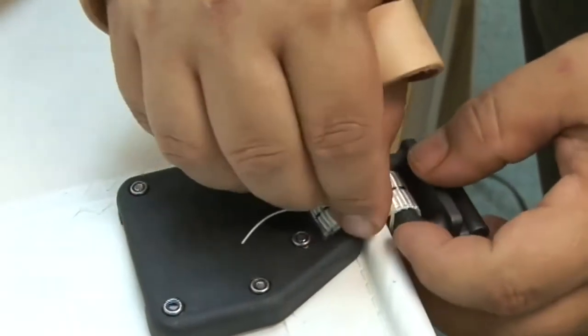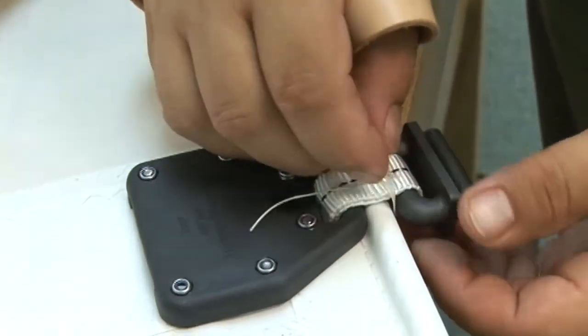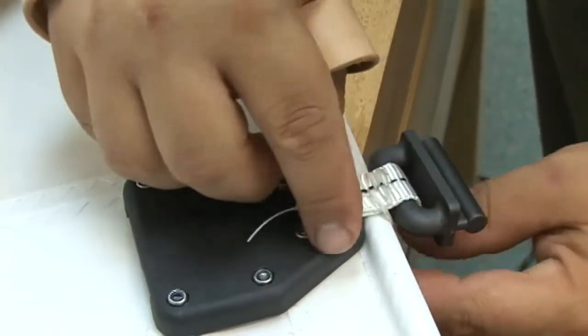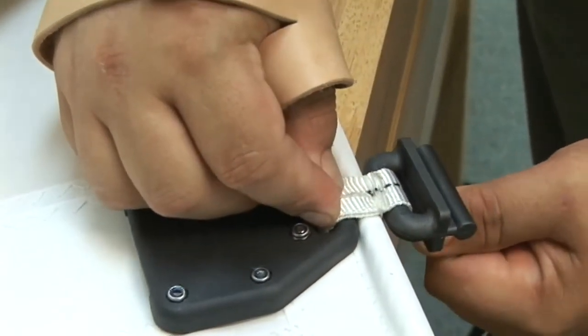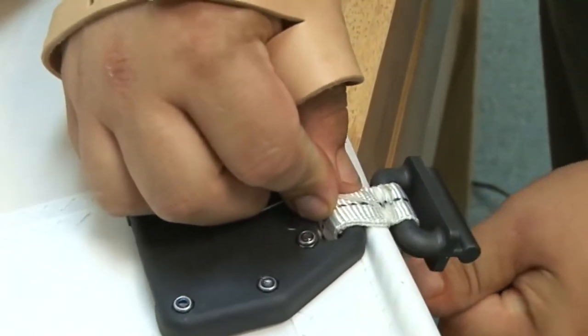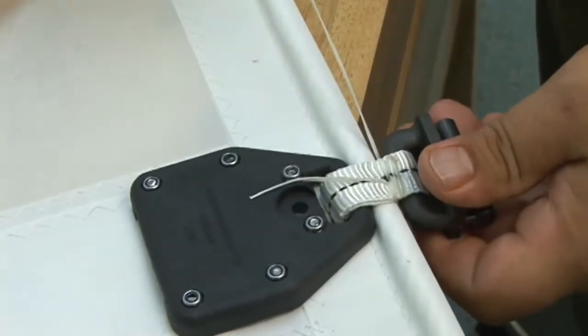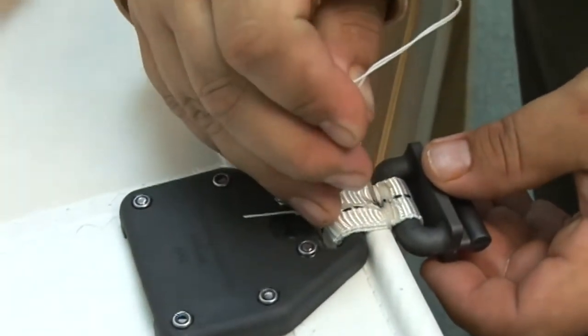Three complete figure eights. There's one complete figure eight. Make sure it lays on top of that webbing as well. Tighten it up. Here we are coming around again.